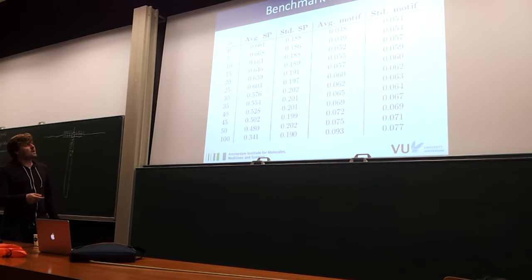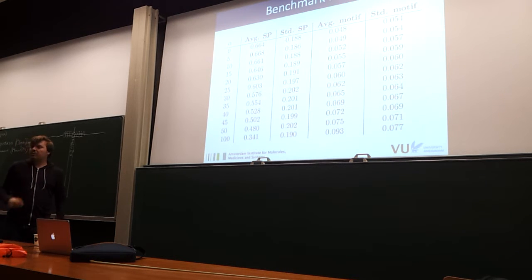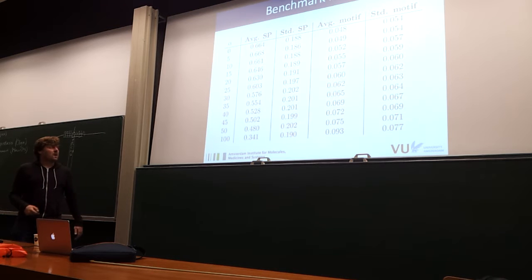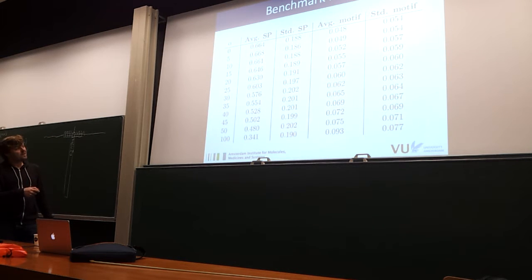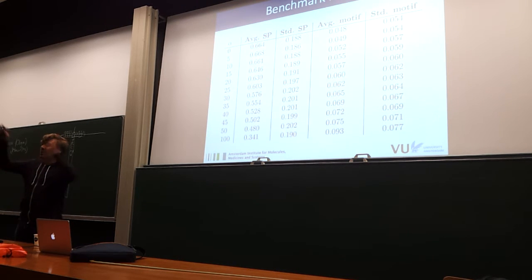We also benchmarked the method. This is the overall alignment quality and this is the motif alignment quality — how well motifs are aligned on top of each other. You can see that if you start increasing alpha, the overall alignment quality goes down dramatically. This is also due to small spurious motifs: if you make alpha strong enough, it will just pull the entire alignment apart just to align those spurious motifs on top of each other.